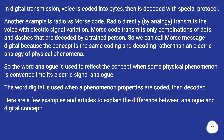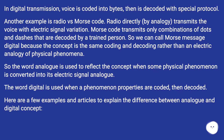Another example is radio versus Morse code. Radio directly, by analogy, transmits the voice with electric signal variation. Morse code transmits only combinations of dots and dashes that are decoded by a trained person. We can call a Morse message digital because the concept is the same — coding and decoding — rather than an electric analogy of physical phenomena. The word analog reflects when some physical phenomenon is converted into its electric signal analog.